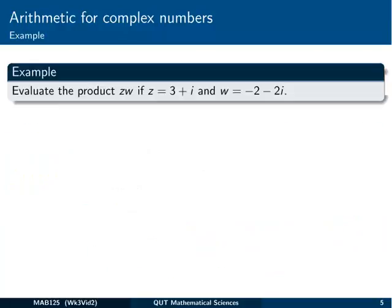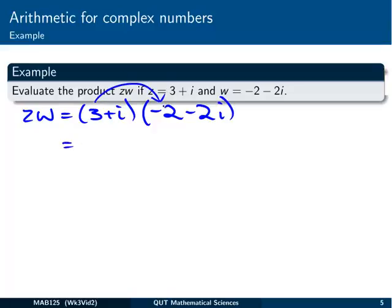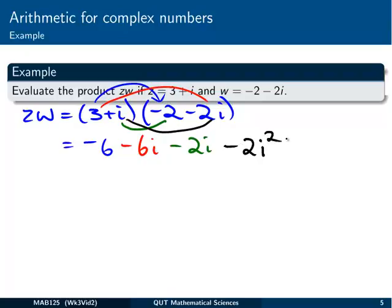So let's try it with an example. We've got z times w. Z is 3 plus i, w is minus 2 minus 2i. So my distributive law, I'm going to go 3 by minus 2 is minus 6. Then I've got 3 by minus 2i, so that's going to give me minus 6i. Then I've got i times minus 2, so that's minus 2i. And finally, i times minus 2i is going to be minus 2i squared.